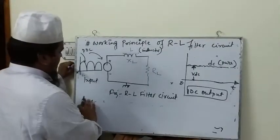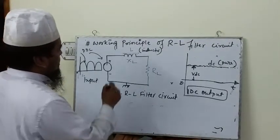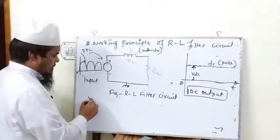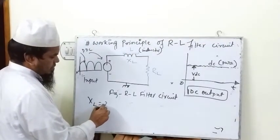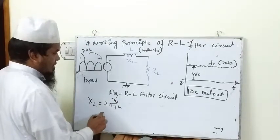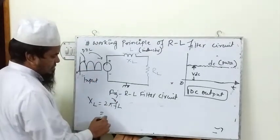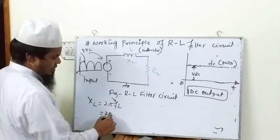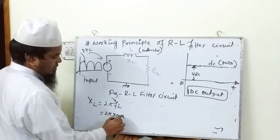Now in this case, the series XL is 2πFL. This is DC, zero. The frequency is zero. Zero into L is zero.